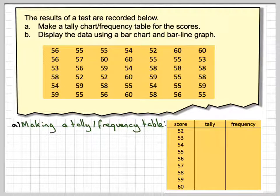And what you do is you go through the data crossing off and putting a line: the 56, 55, 55, 54, 52, 60, 60.